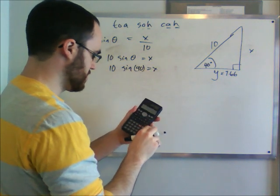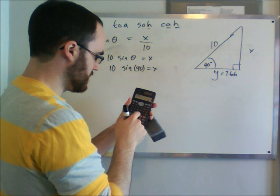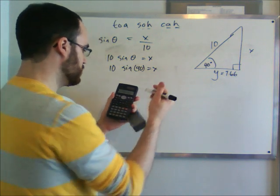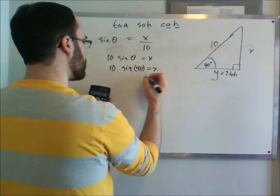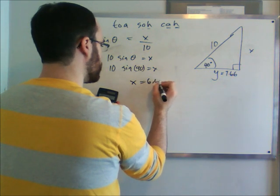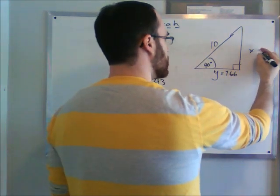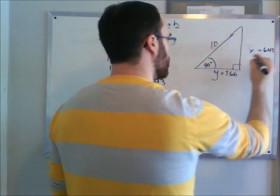So again, on my calculator, I'm just going to type 10 times sine 40 equals 6.427. So 6.43. x equals 6.43. And we've now solved for all the sides of the triangle.